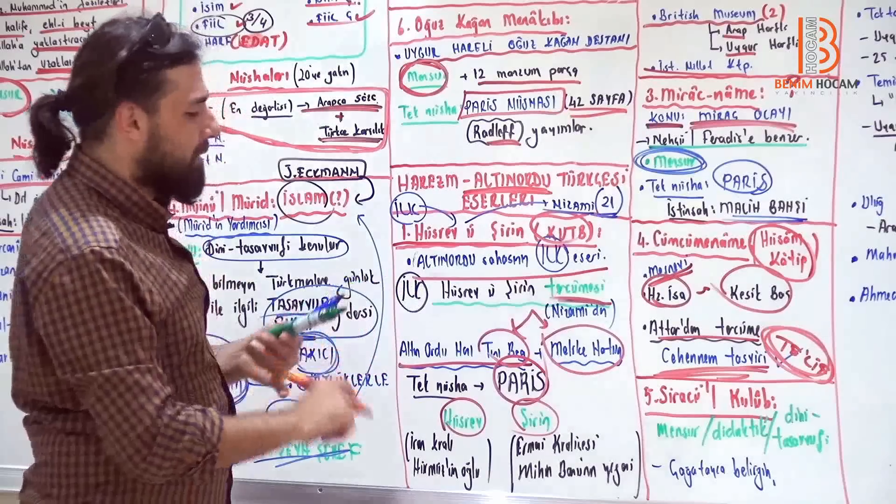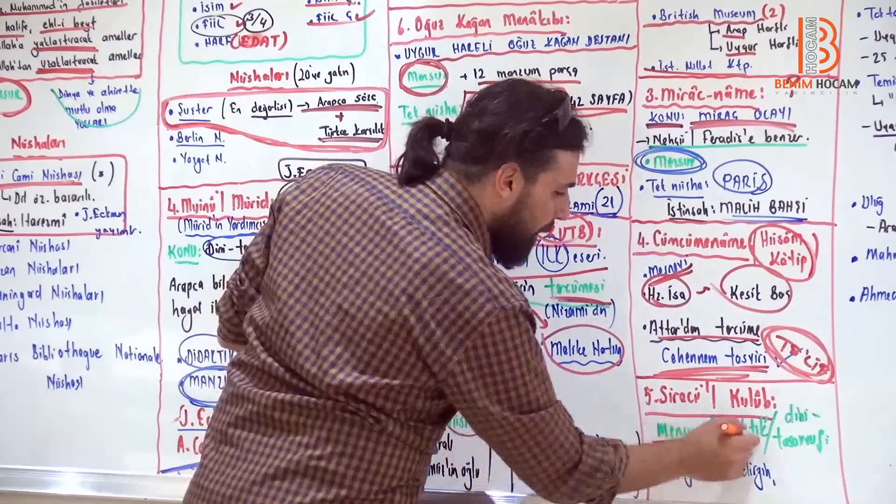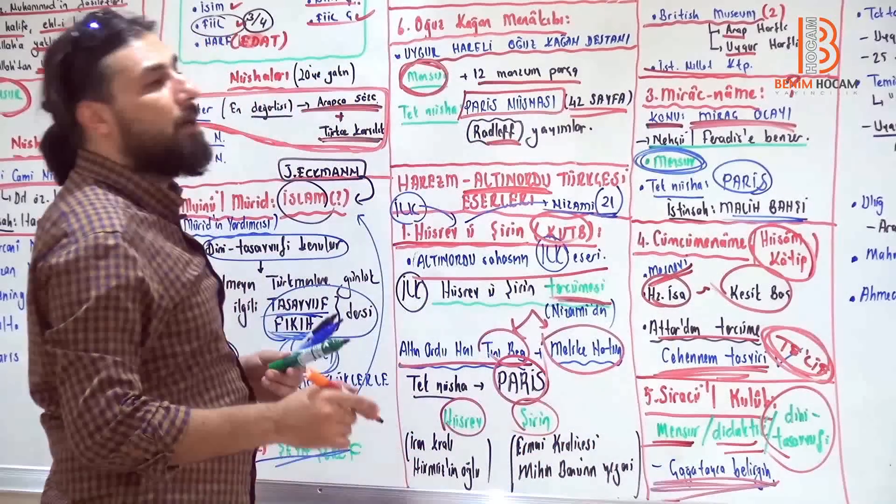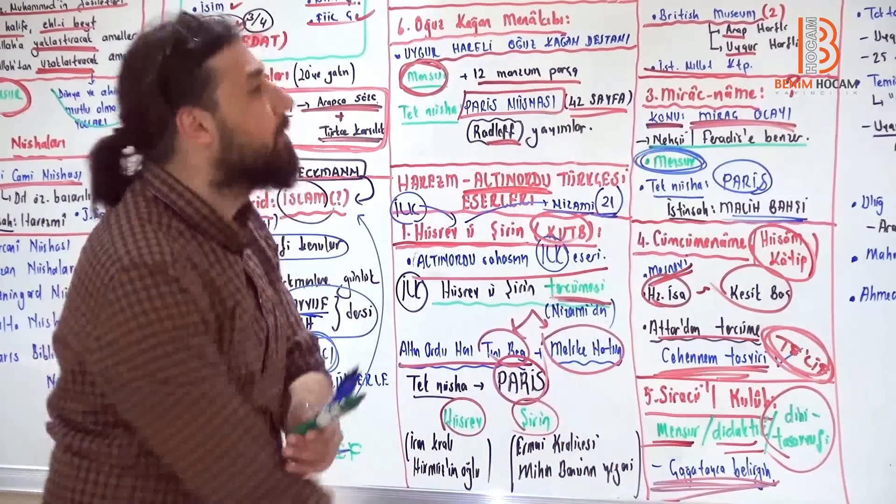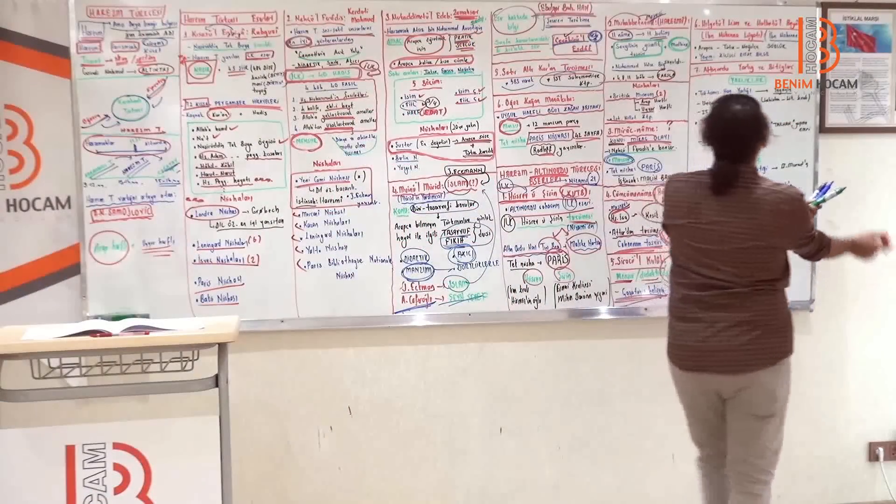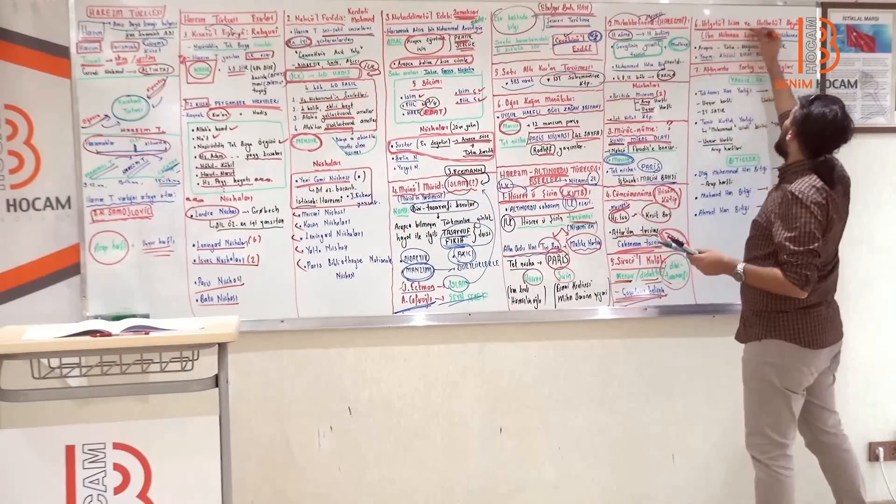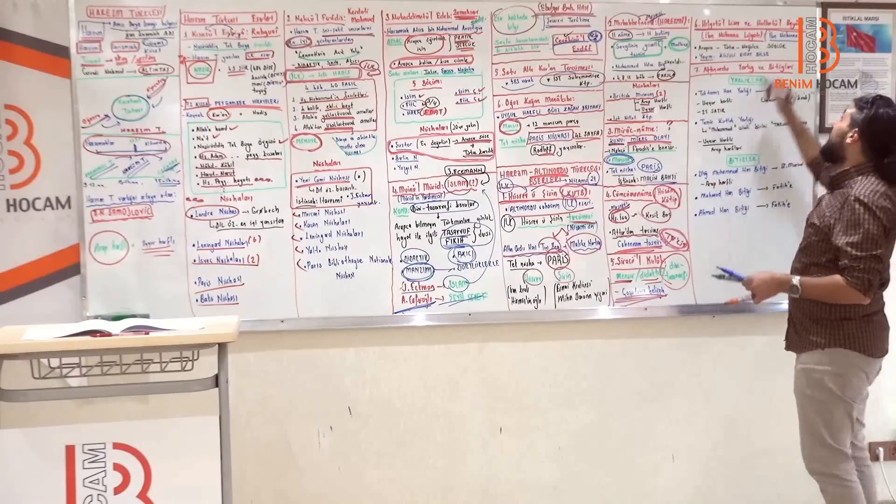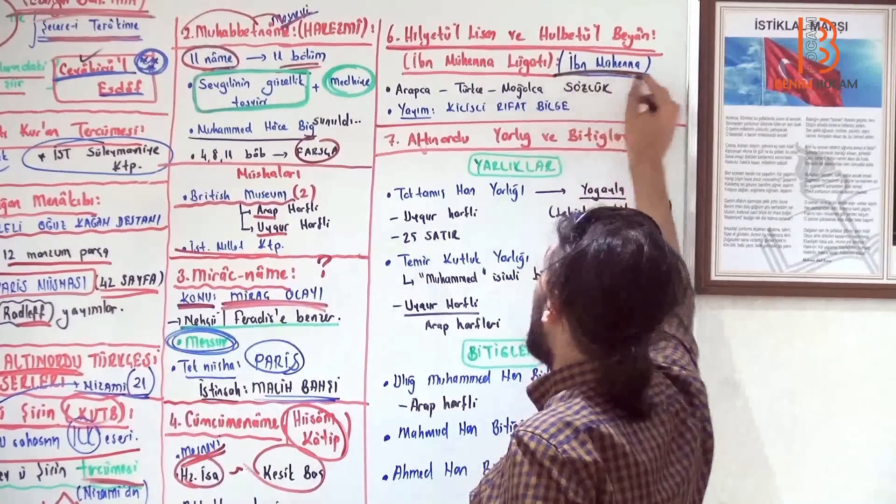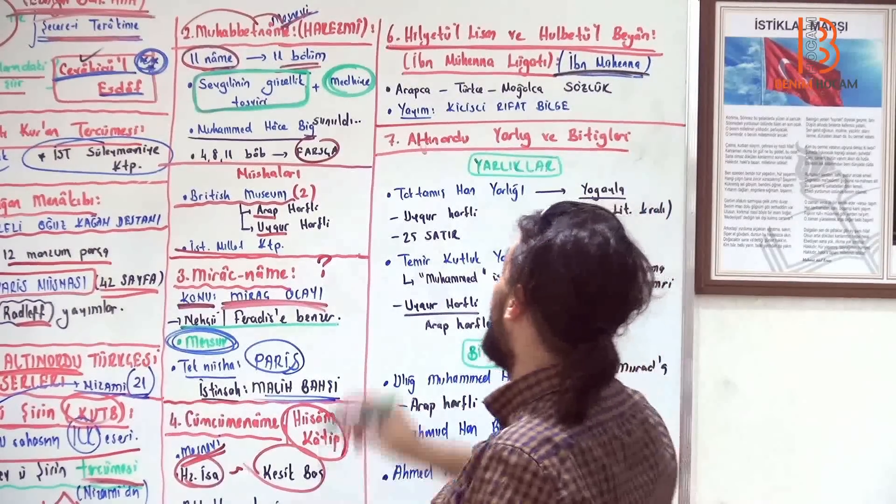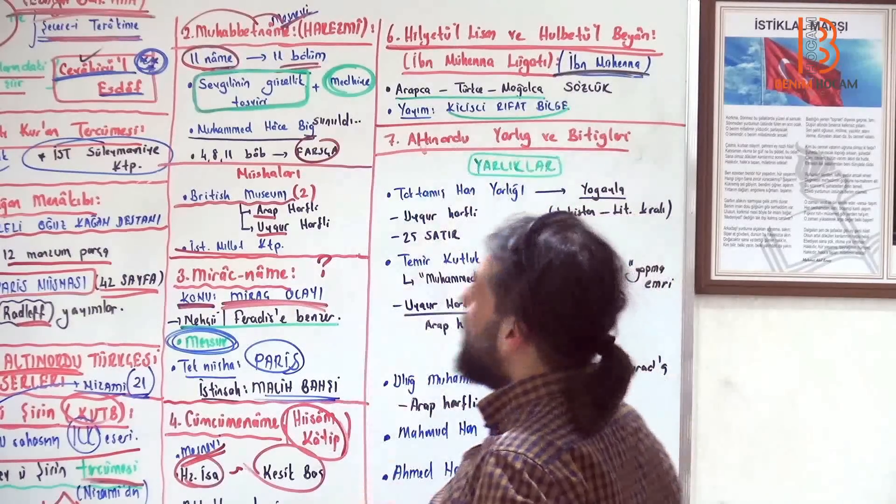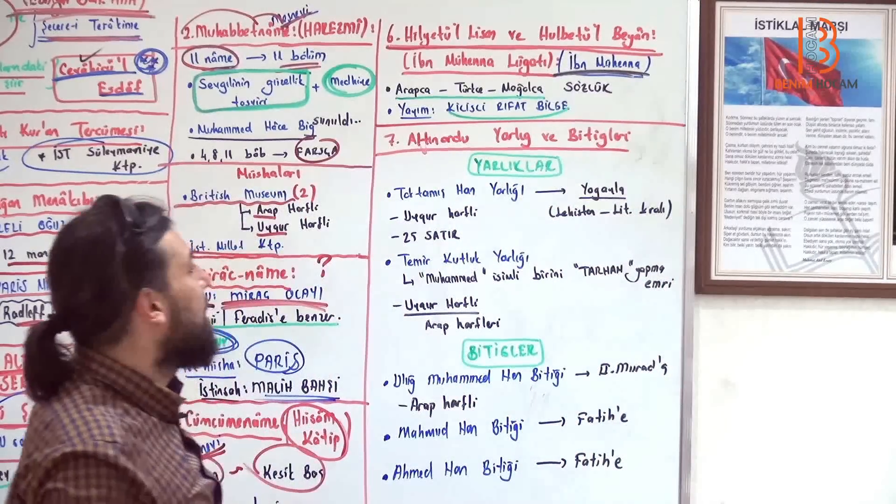Sıracılık Kulüp. Şimdi kısa kısa bak. Mensur, didaktik, dini tasavvufi bir eserdir. Ama Çağatayca biraz daha belirgindir. Bir sözlük daha var. Hilye-til Lisan ve Hulbe-til Beyan. İbni Muhanna lugatı diye geçen İbni Muhanna'nın yazdığı bir sözlüktür. Arapça, Türkçe, Moğolca bir sözlüktür. Kilisli Rıfat Bilge sağ olsun yayınlamıştır.